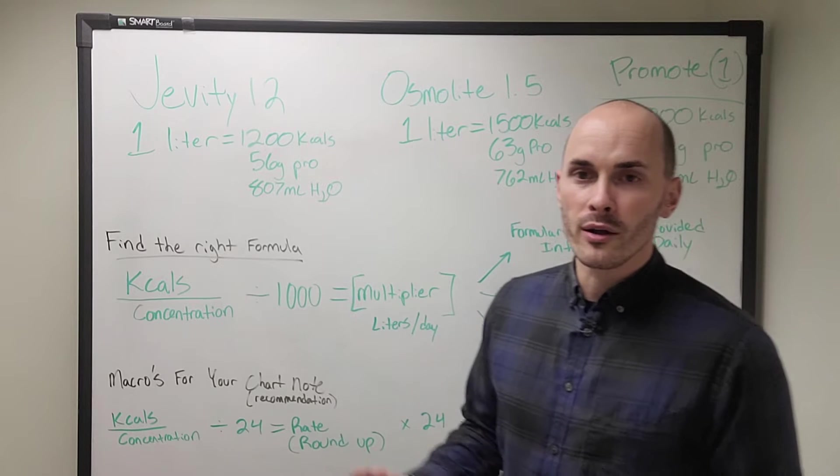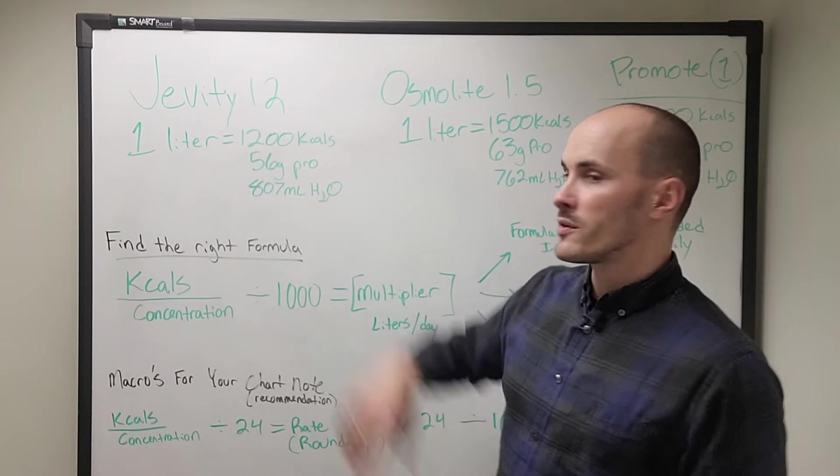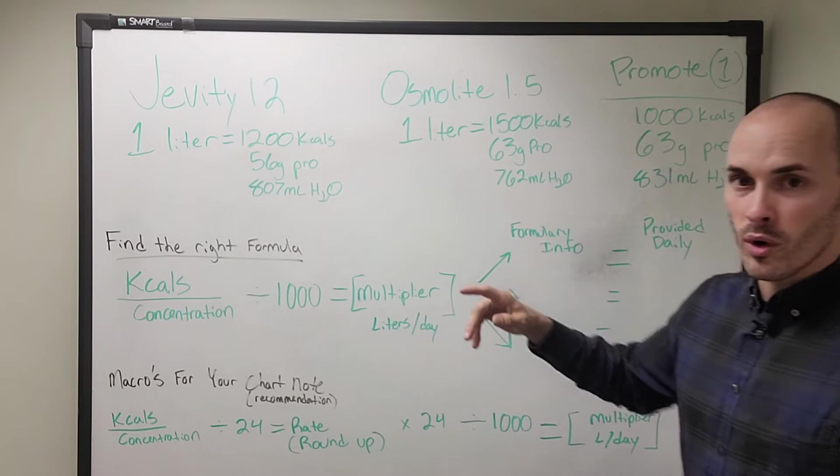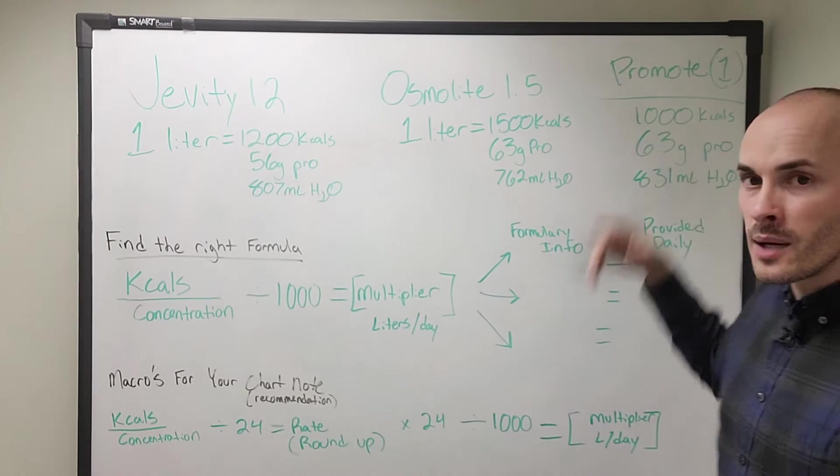So in some of my other prior videos, we looked at three different formulas: Jevity 1.2, Osmolite 1.5, and Promote 1Cal.